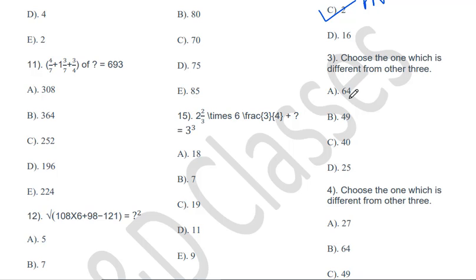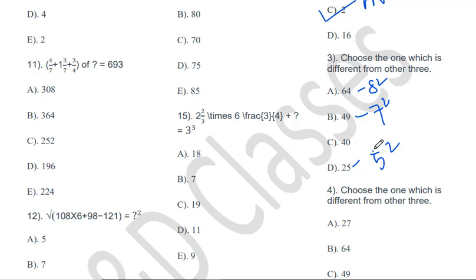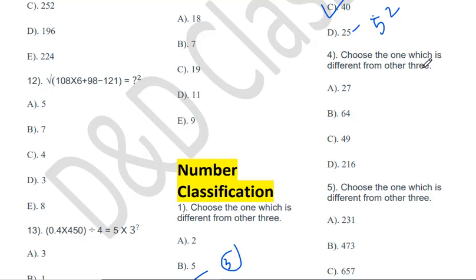Choose the one which is different from the other three: 64, 49, 40, 25. We can easily see that 25 is 5 squared, 49 is 7 squared, and 64 is 8 squared, but 40 is not a perfect square of any number. Therefore, 40 will be the odd one out.